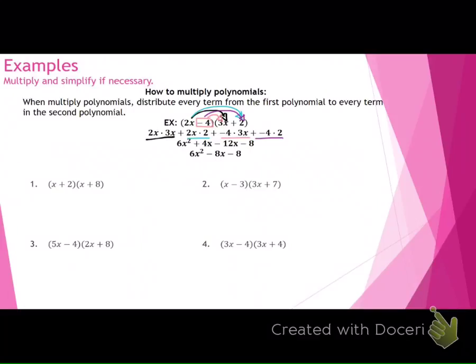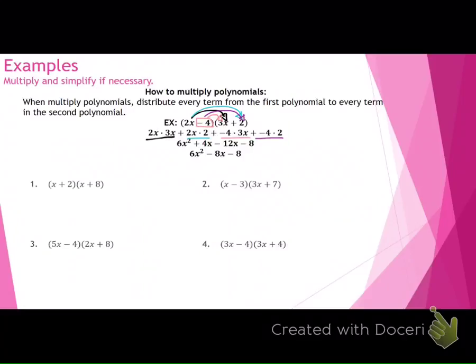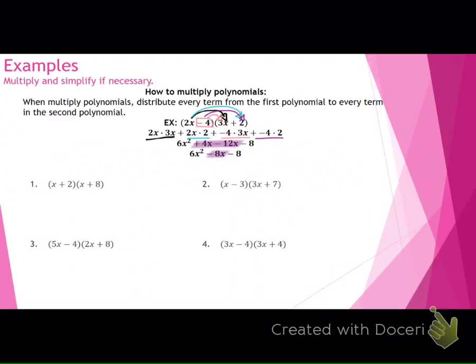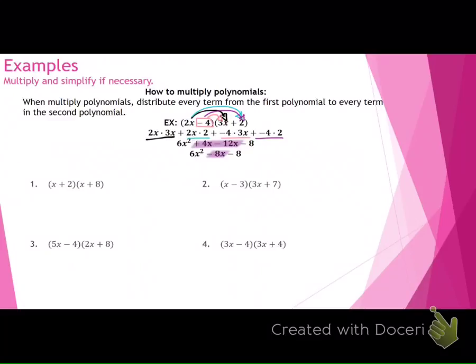Do you see how they took everything that was separated by an addition or subtraction and gave it to everything in the second term? Then they simplified. 2x times 3x is 6x squared. When multiplying, add the exponents. When combining like terms, keep them the same. 2x times 2 is 4x. Negative 4 times 3x is negative 12x, and negative 4 times 2 is negative 8. Then they looked for their like terms and got 6x squared plus negative 8x minus 8.